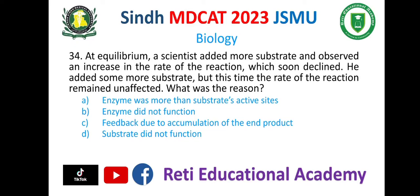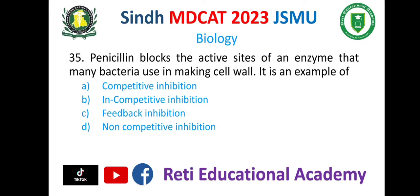Question number 35. Penicillin blocks the active sites of an enzyme that many bacteria use in making cell walls. It is an example of: A. Competitive inhibition, B. Non-competitive inhibition, C. Feedback inhibition, D. Non-competitive inhibition. The correct option is C. Feedback inhibition.